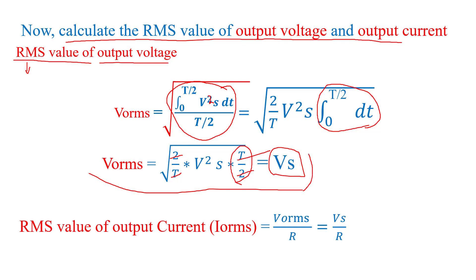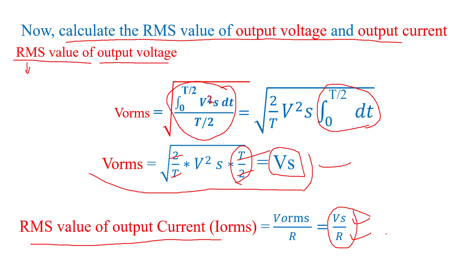The RMS value of output current is calculated using I_RMS = V_RMS / R = VS / R. In this way we calculate the average and RMS values of output voltage and current.